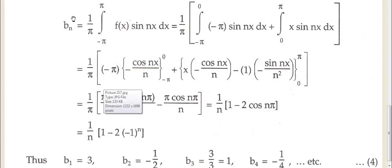Now bn. Same logic. 1 upon pi, minus pi to pi, f(x) sin nx dx. So again break it minus pi to 0, 0 to pi. Constant function minus pi to 0, variable function 0 to pi. Again take the integrals.